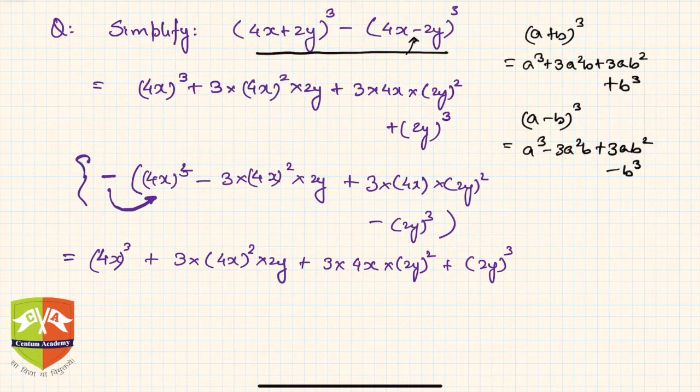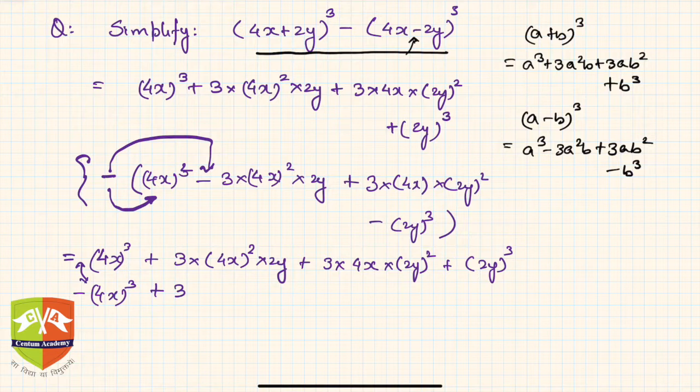Minus (4x)³. So if you see this is going to be cancelled, hence I didn't calculate it. Then minus multiplied by minus will give you plus, so plus 3 into (4x)² into 2y.